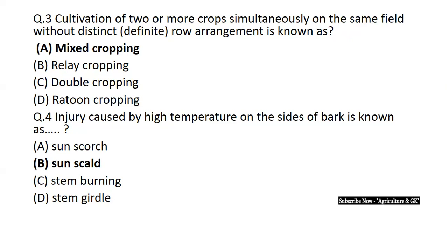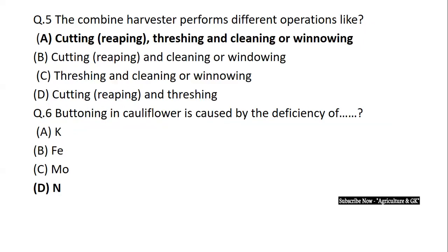Next question: Cultivation of two or more crops simultaneously on the same field without distinct definite row arrangement is known as? Without any row-to-row distance maintained, that is called mixed cropping. Next: Injury caused by high temperature on the sides of bark is known as sun-scald. The combined harvester performs operations like cutting, threshing, and cleaning.